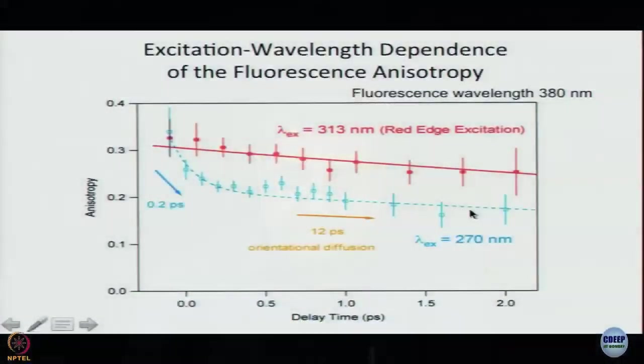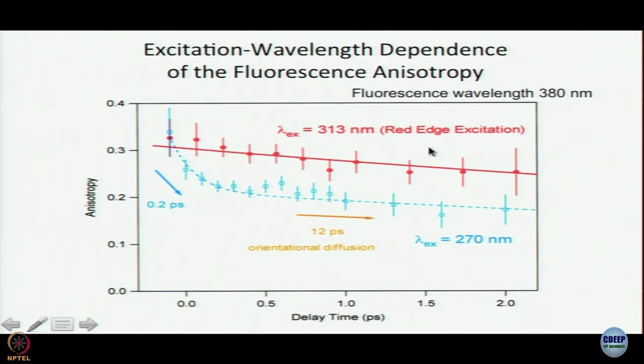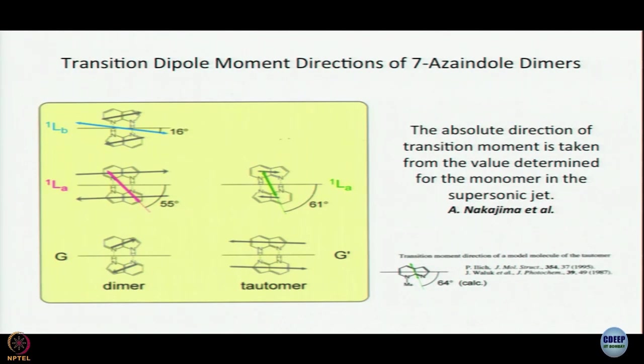So in the long time regime, the two anisotropy decays are almost parallel — that is due to rotation. But at short timescales, if you see something like that, it tells you that some excited state process is happening on that timescale. That is seen prominently for excitation at higher energy but not for excitation at lower energy — meaning that at 313 nanometer excitation you are not exciting the S2 state, only the S1 state; at 270 nanometer excitation you do excite the S2 state. This was explained using the directions of all transition moment integrals from calculations by Nakajima et al. and others like Wallwork.